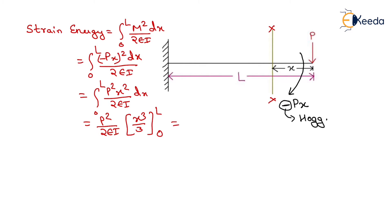After putting the upper and lower limit, we will get the strain energy equals to P square L cube upon 6EI.